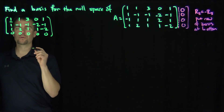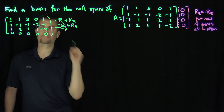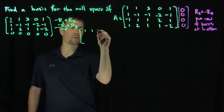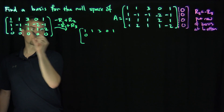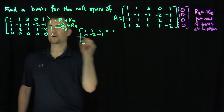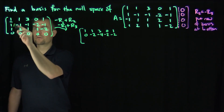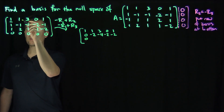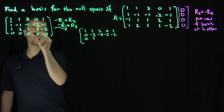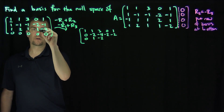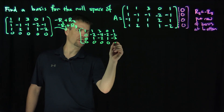Now I have a lead one here, so I'm going to do two steps at once: negative row one plus row two, and negative row one plus row three. Row one stays the same: 1, 1, 3, 0, 1. For row two, I get a zero by design, then negative 2, negative 4, negative 2, negative 2. For row three, I also get a zero, then positive 1, negative 3, negative 2, and then 0, 1, negative 3. Then zeros below.